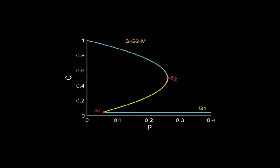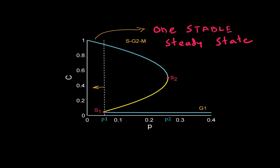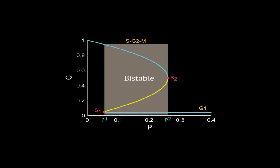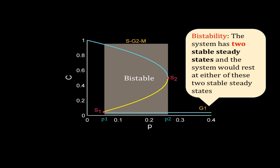I have drawn the bifurcation diagram for C. I have not shown the diagram for A, but C and A are mutually opposite, so A has just the opposite behavior in the bifurcation diagram. When C is high, A will be low and vice versa. This bifurcation diagram has two saddle node bifurcation points, S1 and S2. The stable steady states are in blue and the unstable one is in yellow. For P less than P1, the system has only one steady state with very high C. This steady state is stable. Similarly, for P greater than P2, the system has one stable steady state. Here C is very low but A is very high. However, between P1 and P2, the system has two stable steady states separated by one unstable steady state. This region is called the bistable region.